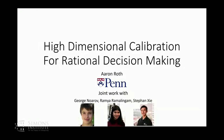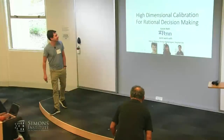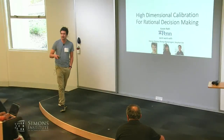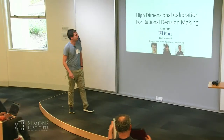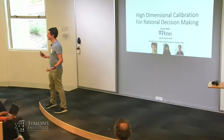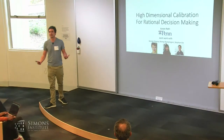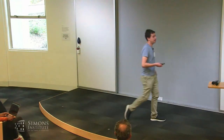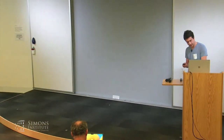The title of this workshop is online and matching-based market design. In English, 'and' can be ambiguous — is it the union or the intersection? I was gratified to see that many of the talks didn't have an online component, so I feel less guilty about giving a talk that doesn't have a stable matching component.